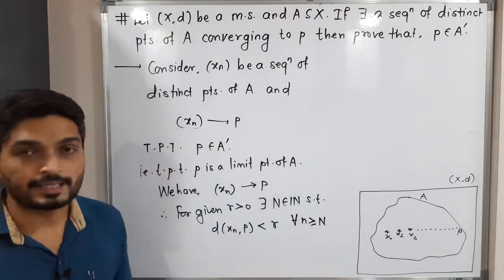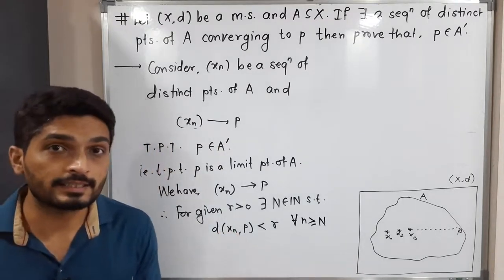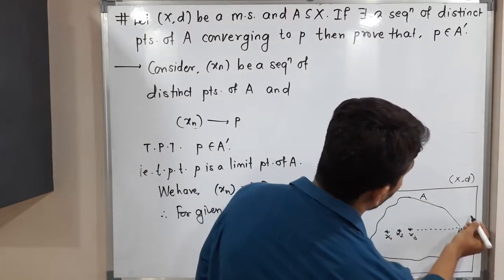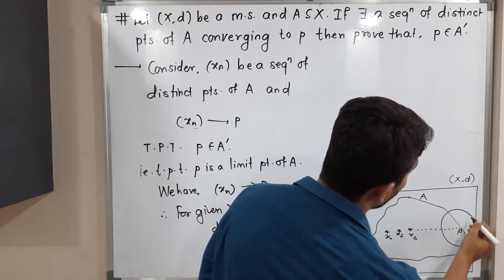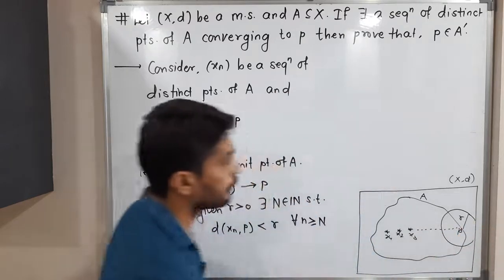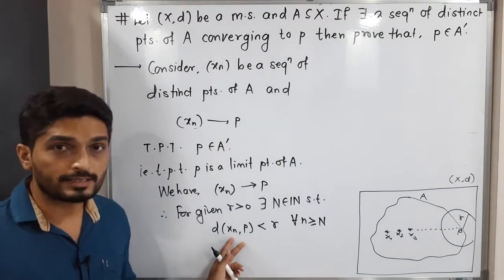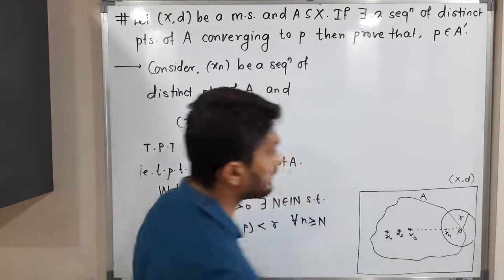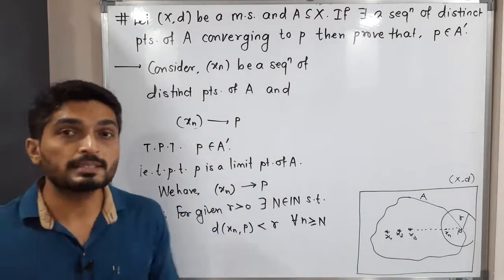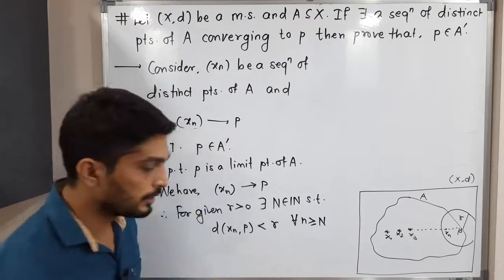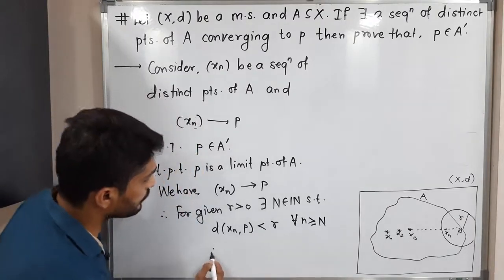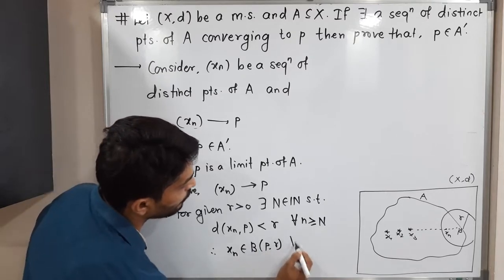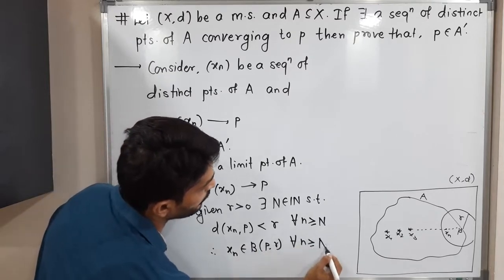So the distance of Xn from P is less than the radius R. If you consider an open ball with center P and radius R, and Xn is some point, then the distance of Xn from P is less than the radius of that ball. That means Xn lies inside the ball. So therefore, Xn belongs to the open ball with center P and radius R, for all n greater than or equal to capital N.